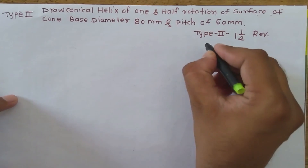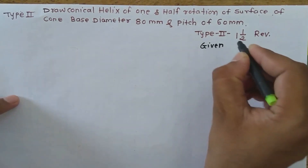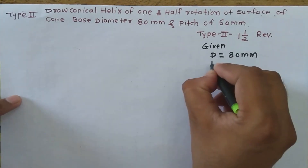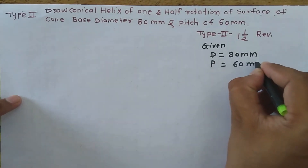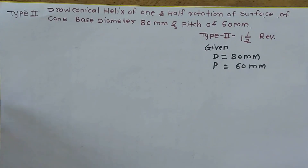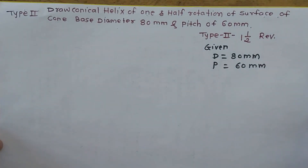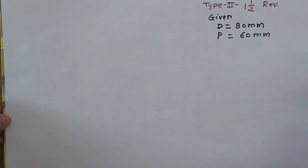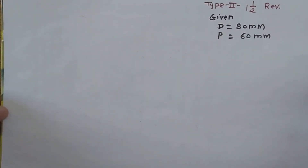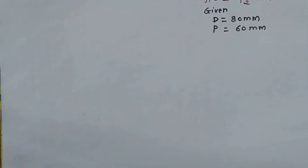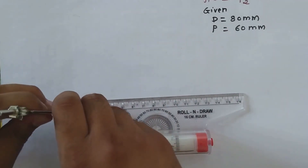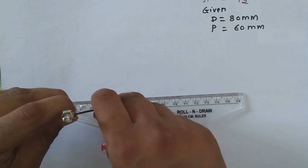From the given data, the diameter of the cone is 80 mm and pitch is 60 mm. The axis height is not given in this problem. As per the procedure, I will start to draw the cone. In top view, the cone looks like a circle, so I will draw a circle in top view with radius 40 mm, since diameter is 80 mm.